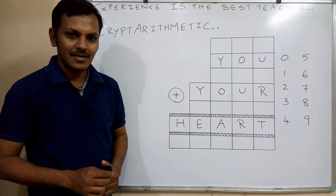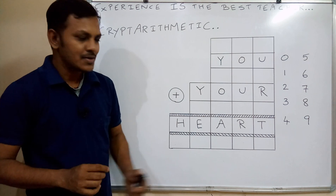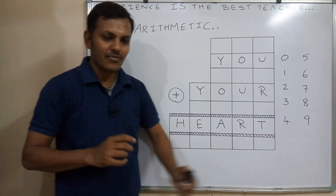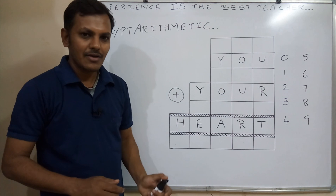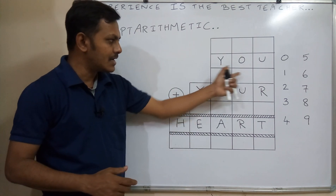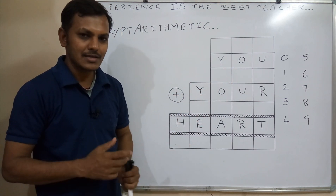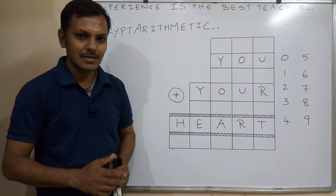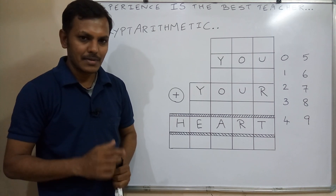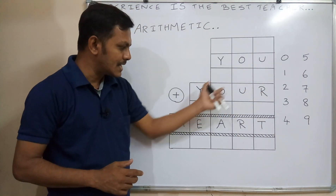Welcome. Arithmetic means adding numbers. Cryptarithmetic means using 10 different digits replacing the English alphabet, finding the answer for a 3-digit number added with another 4-digit number to get a 5-digit number. This is known as a cryptarithmetic addition problem — using 10 different digits replacing the English alphabet.